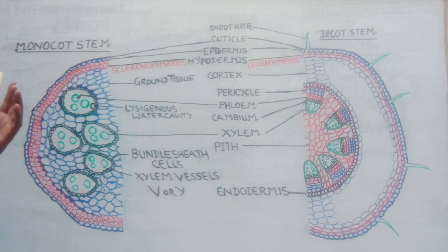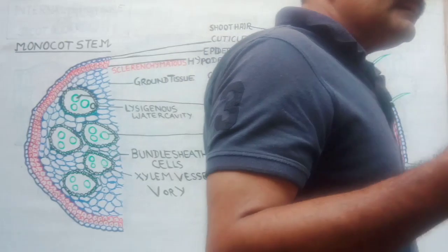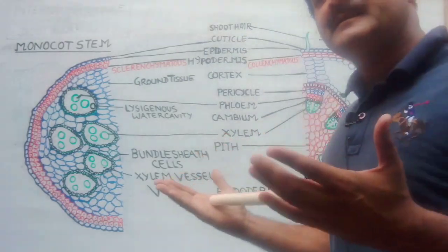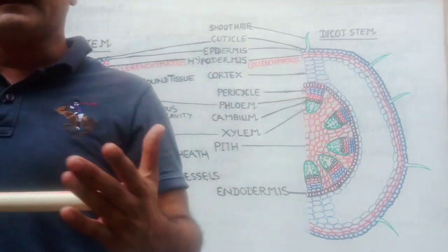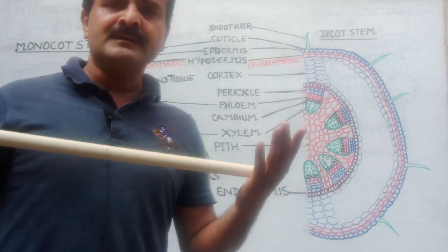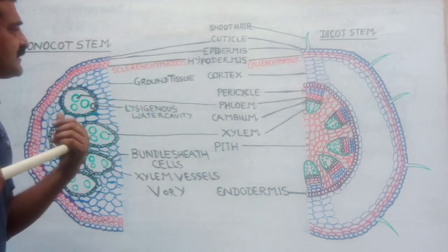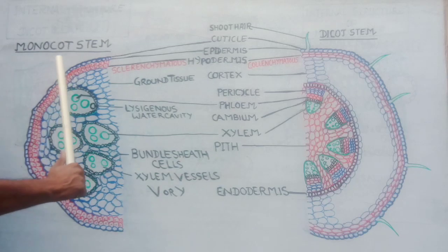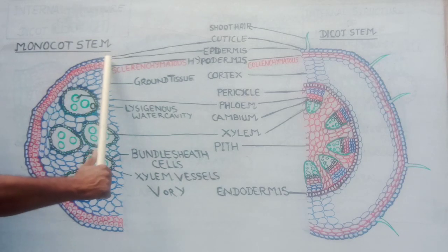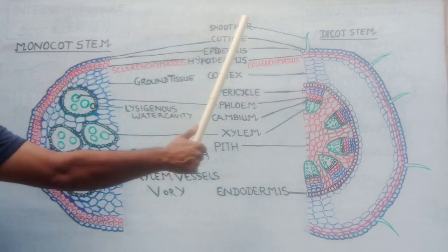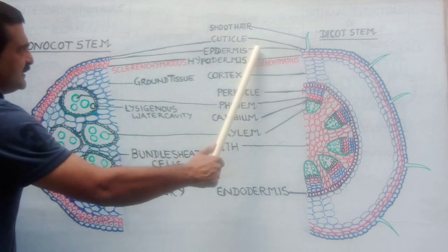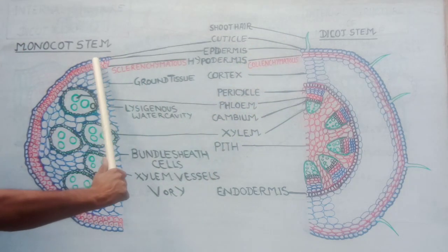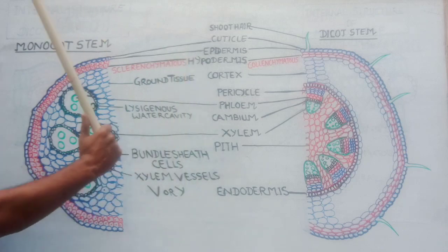Today we are going to start the internal structure and you will learn the differences between monocot and dicot stem. The outermost layer is the epidermis — this is the epidermis of dicot stem and this is the epidermis of monocot stem.